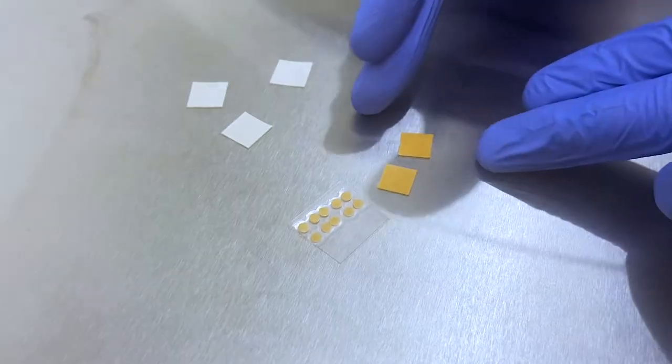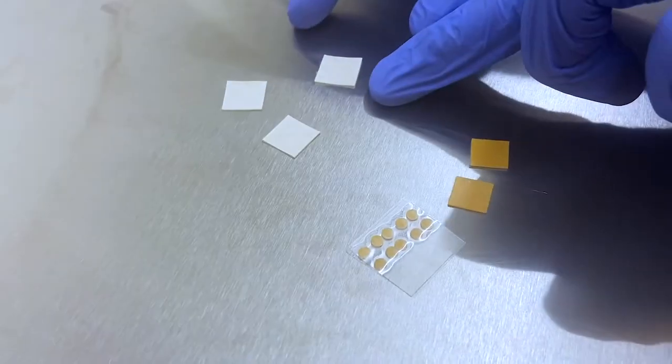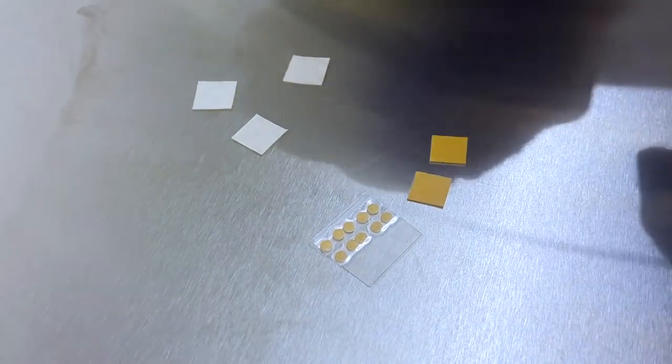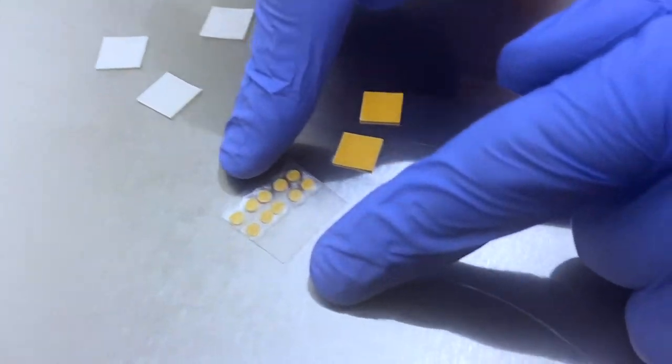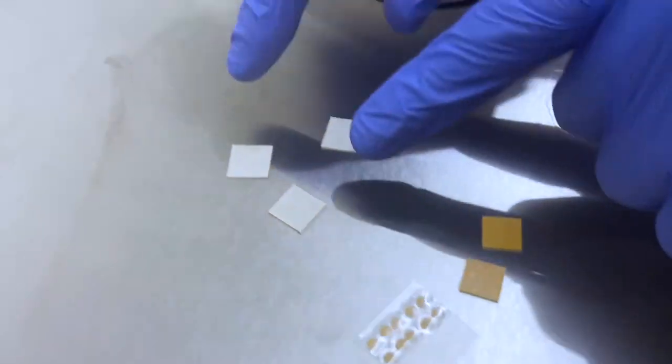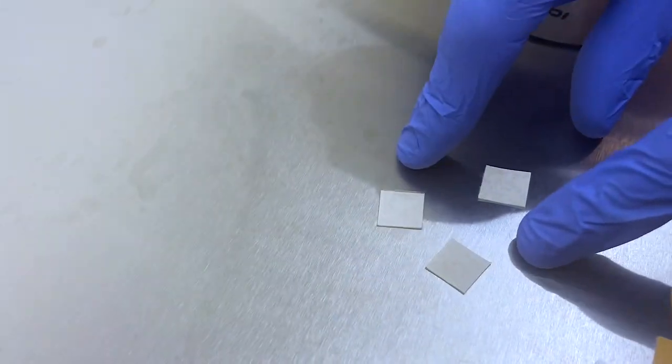Here we can see dissolved oxygen sensors and pH sensors. So the difference between these two is very obvious. The dissolved oxygen sensors have an orange color to them. The pH sensors are off-white and kind of gray.